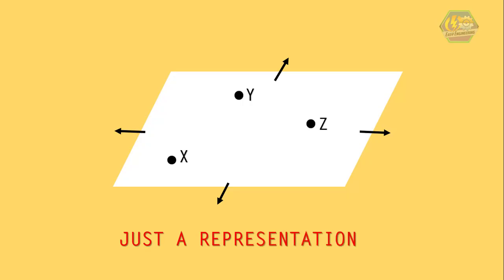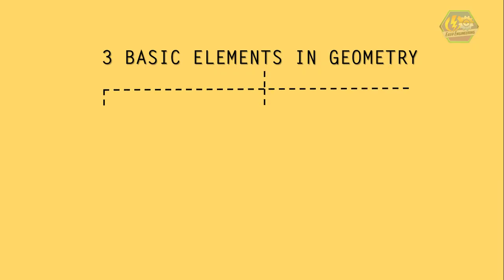Again, it is just a representation because it is very difficult to give a real example of a plane, since a plane extends in all directions without an end. So now you know the three basic elements in geometry, which are